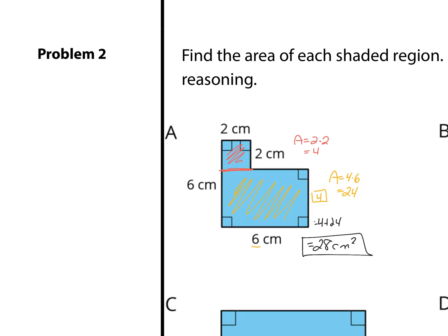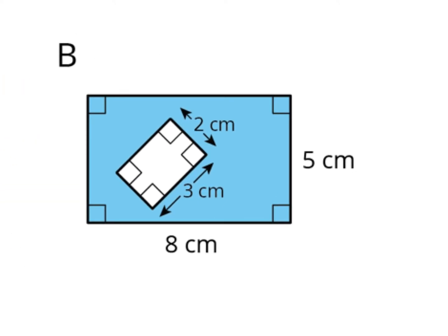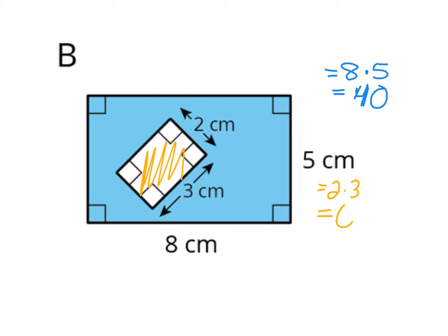What about B? The blue region is a rectangle that's 8 by 5, so 8 times 5 gives 40. The smaller angled rectangle is 2 by 3, so 2 times 3 is 6, but I need to subtract that. My answer is 40 minus 6, or 34 square centimeters.